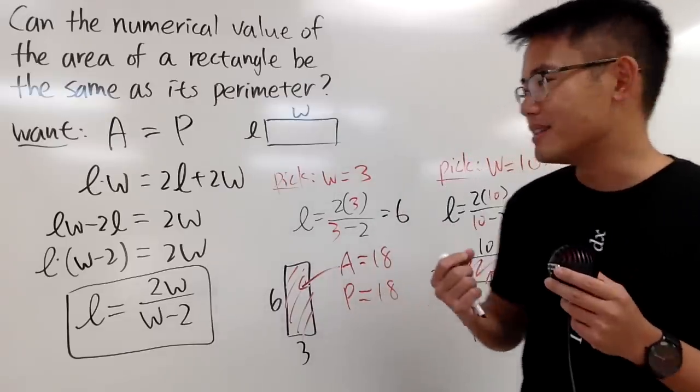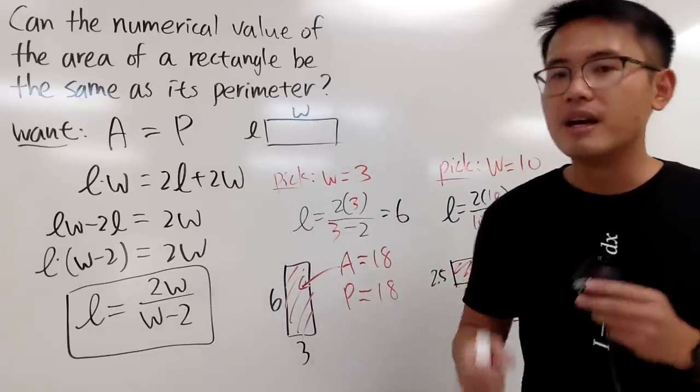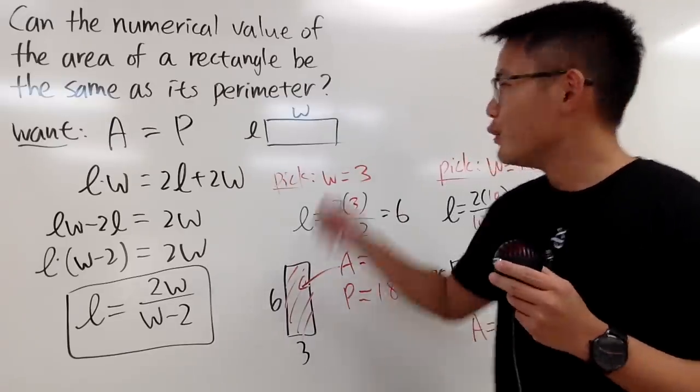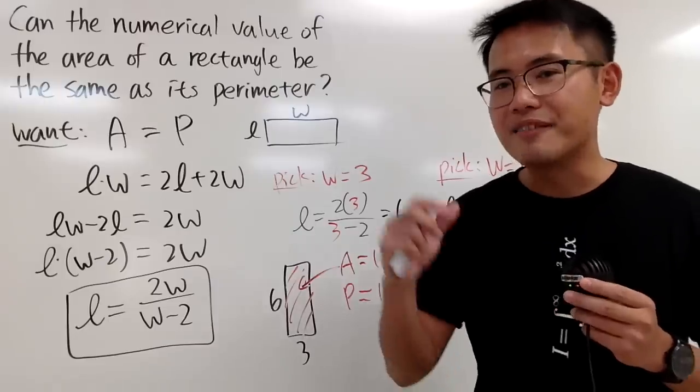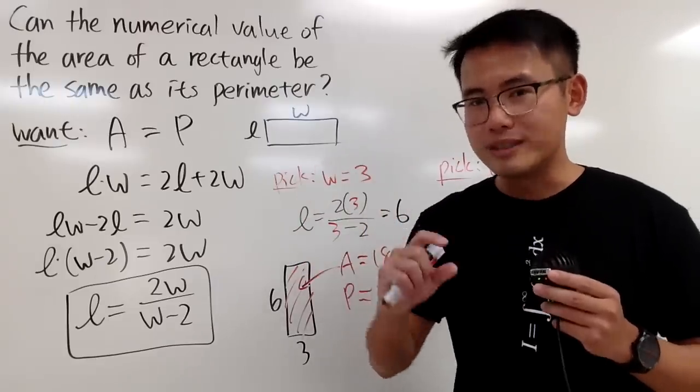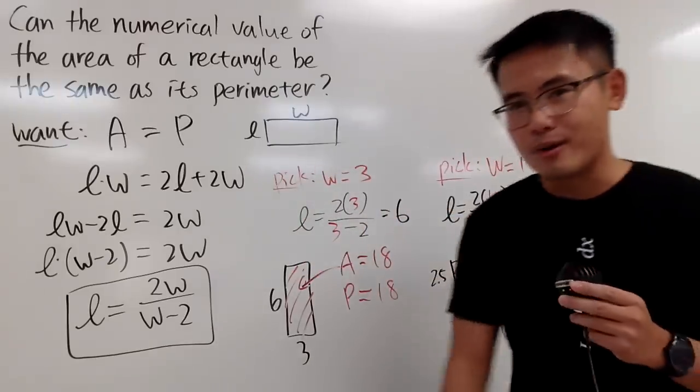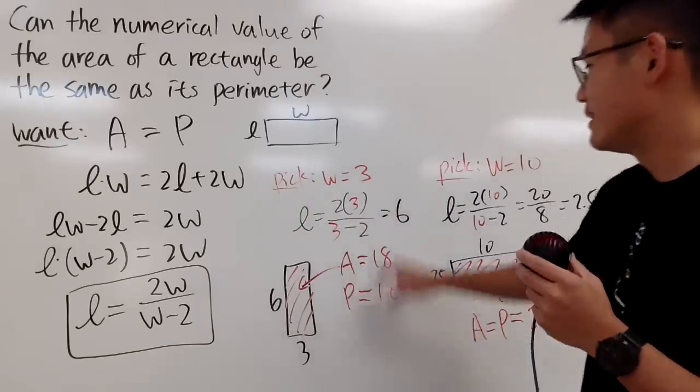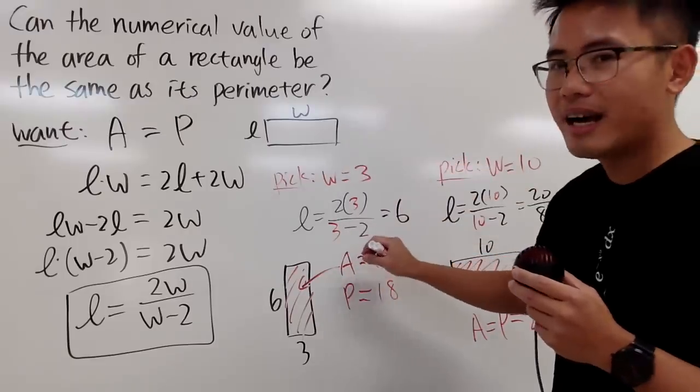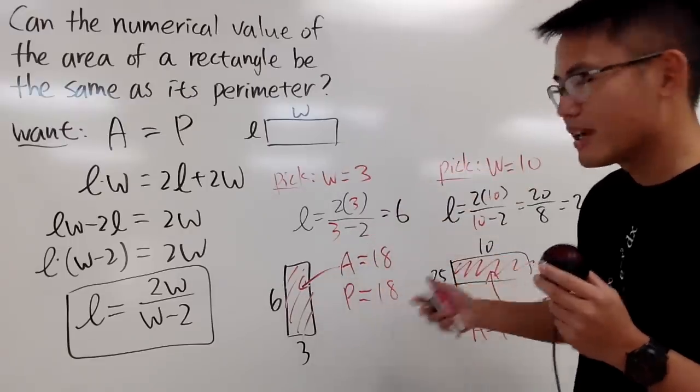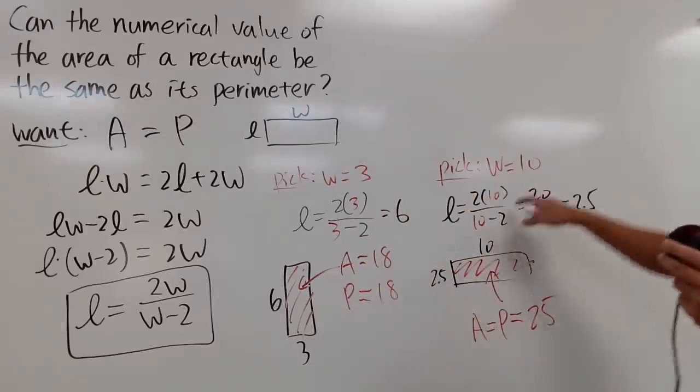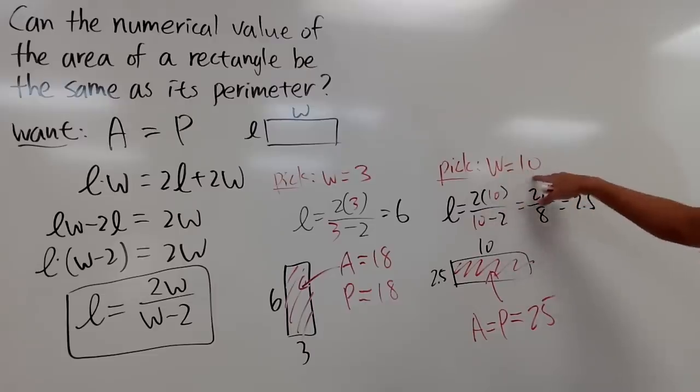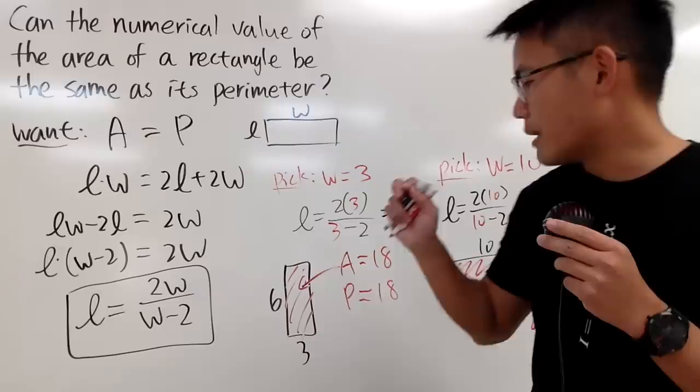This is not that bad at all, but we can make this question slightly more challenging. Can you find rectangles so that they have whole number length and width, such as this one right here, that this rectangle has the same area and perimeter? Of course, once again, the numerical value. You see earlier if I pick w to be 10, yes w is whole number but the length is not whole number anymore.